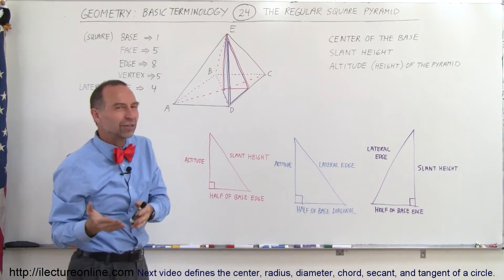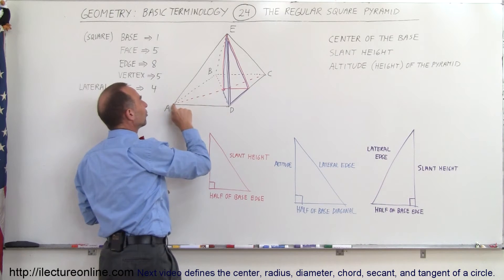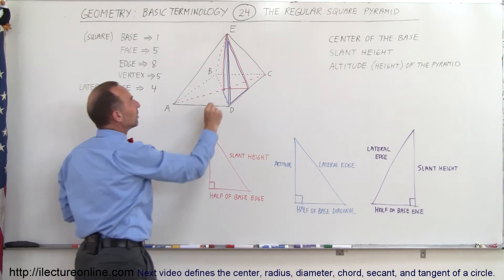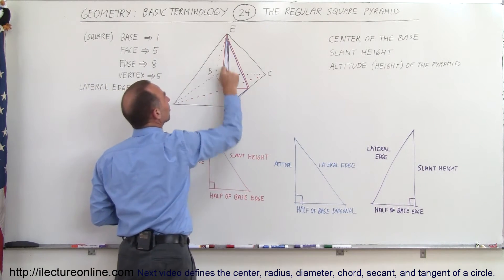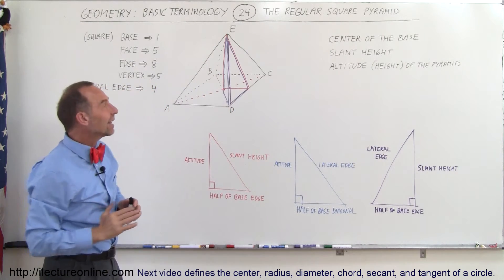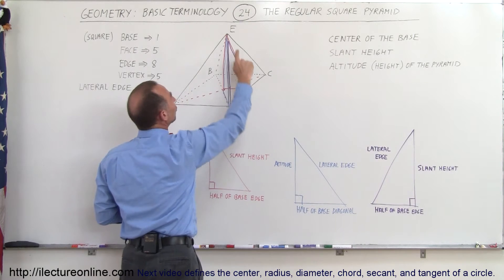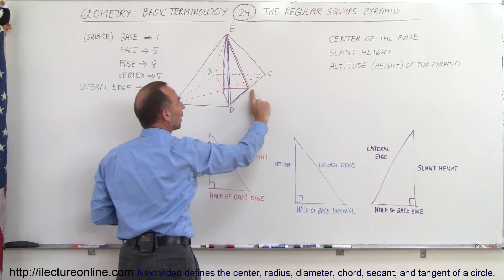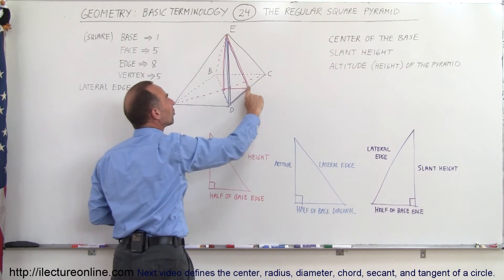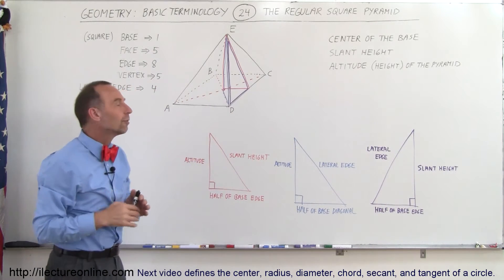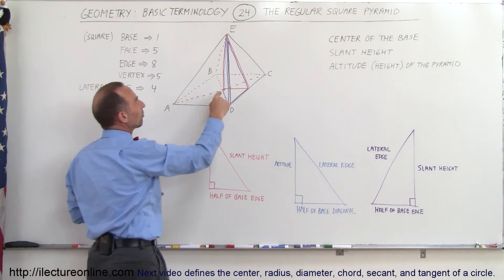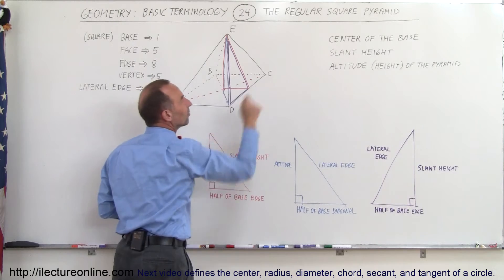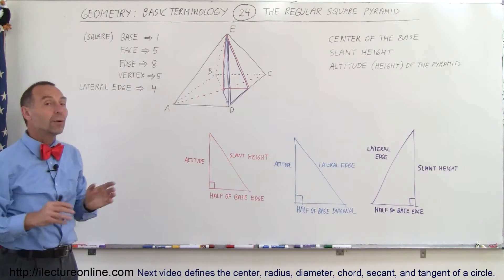We have something called the center of the base. To find it, you draw a line from one corner to the opposite corner, and another line from the other two corners — where the two lines cross is the center of the base, which sits directly beneath the vertex at the top. The slant height is the distance from the middle of one of the base sides up along the slanted face to the vertex. The altitude of the pyramid is the vertical distance from the center of the base all the way up to the vertex.